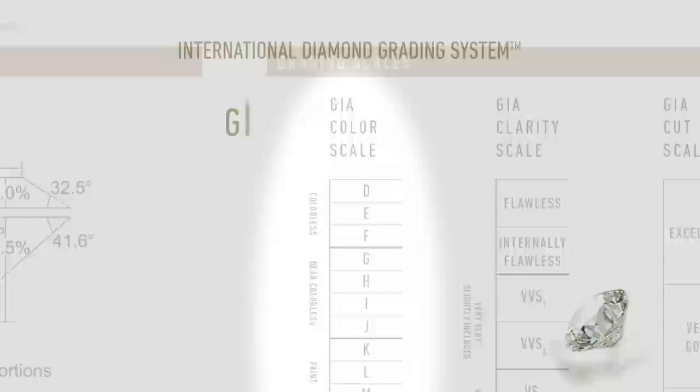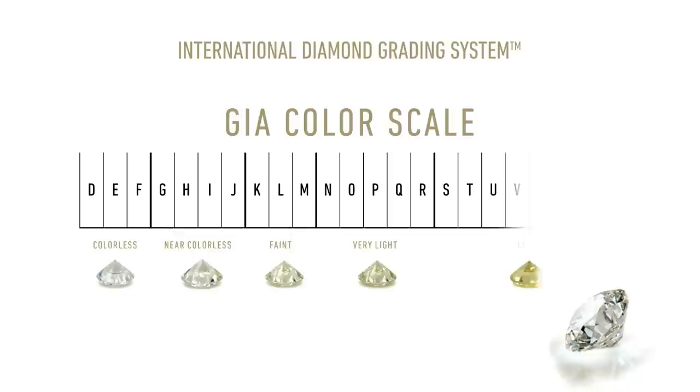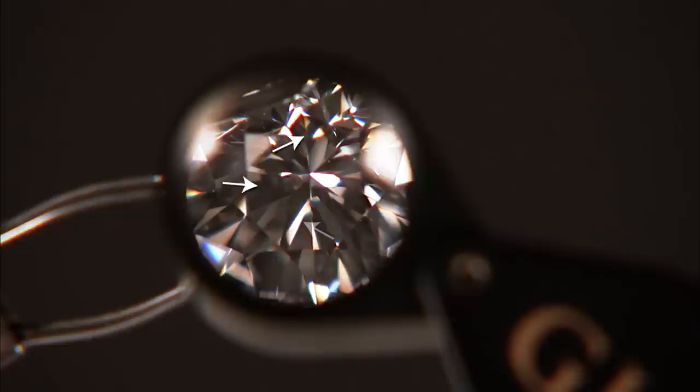The GIA color grading system describes the diamond's lack of color, ranging from D, which is colorless, to Z, which is light yellow or brown.